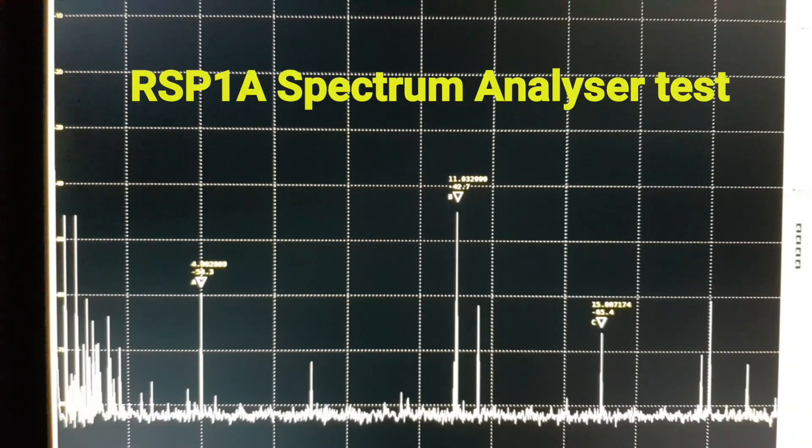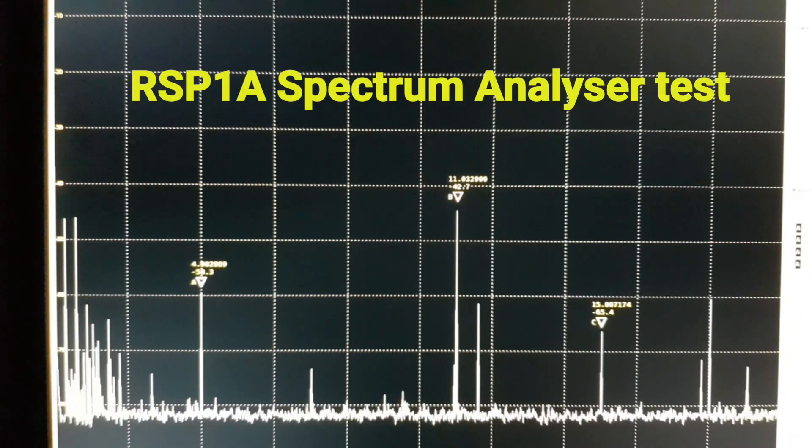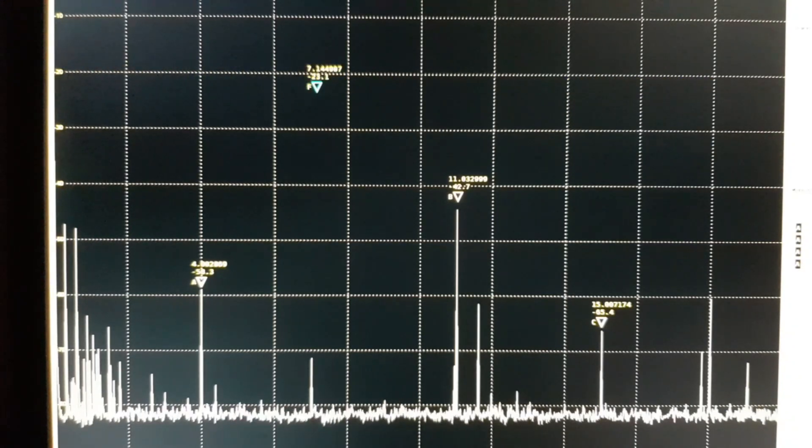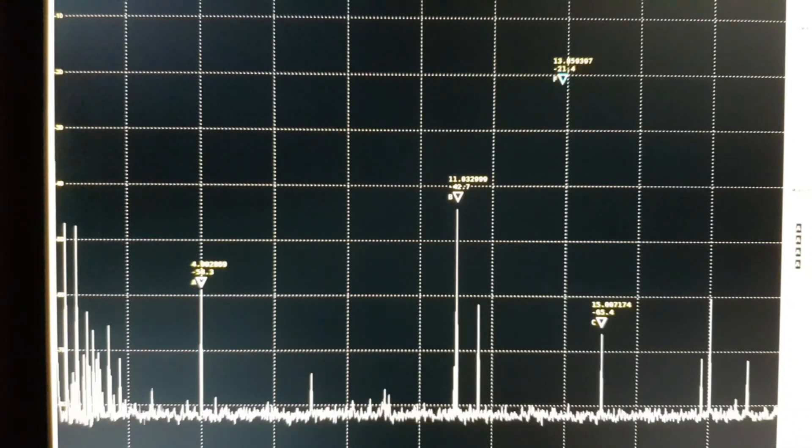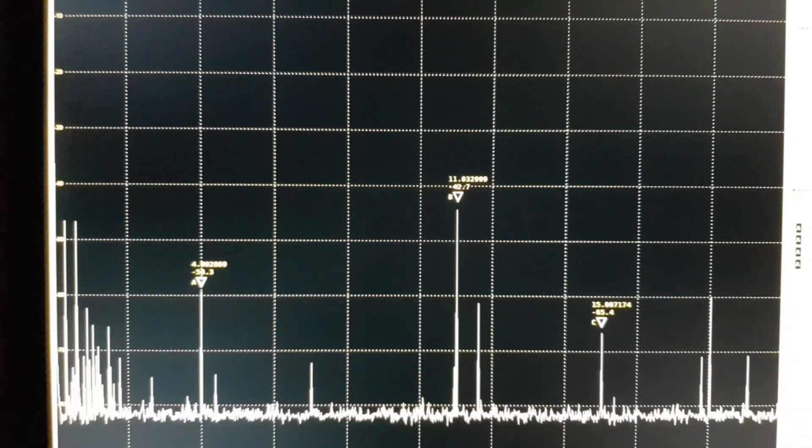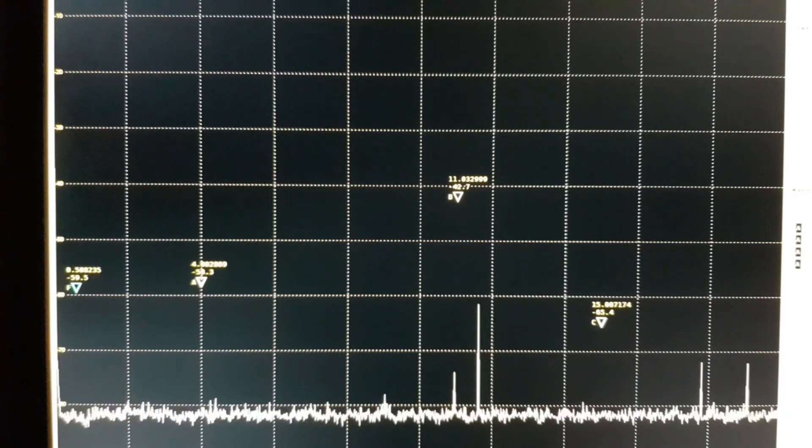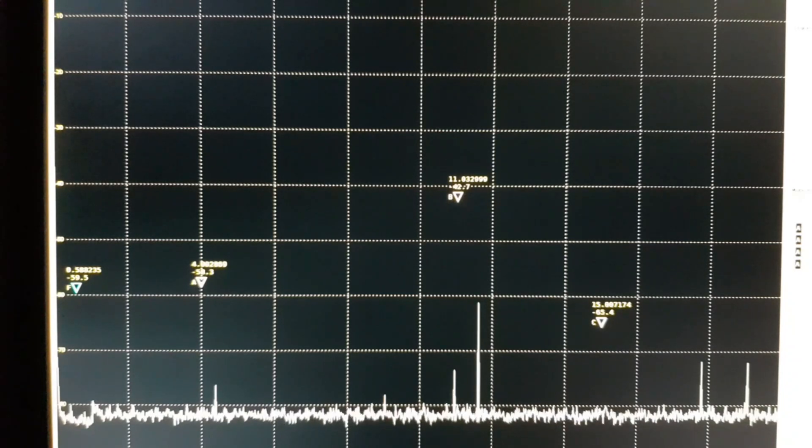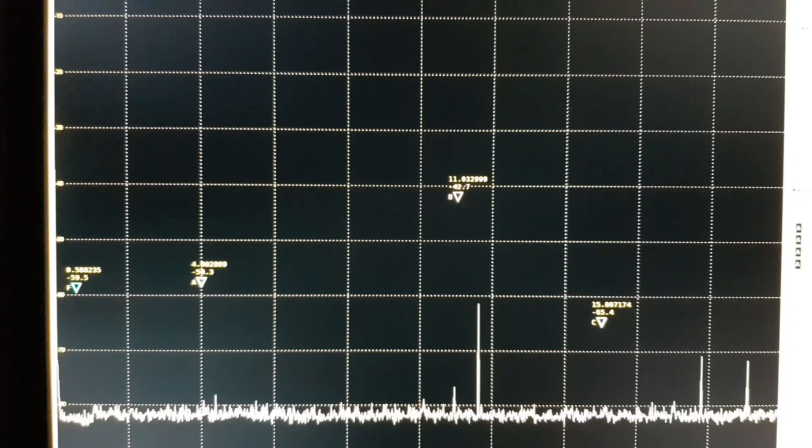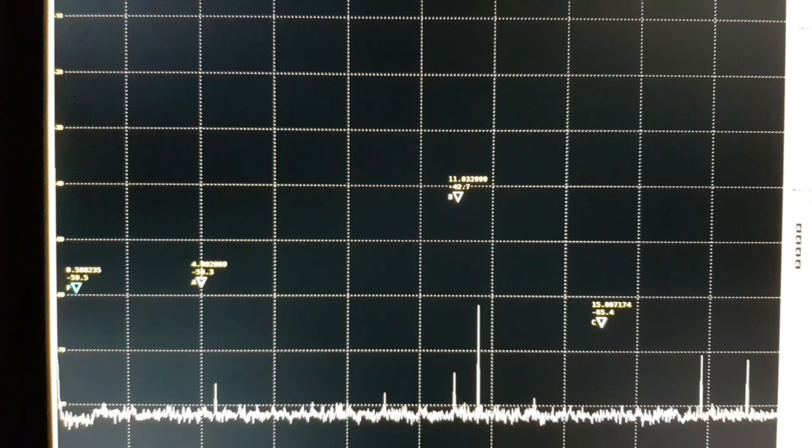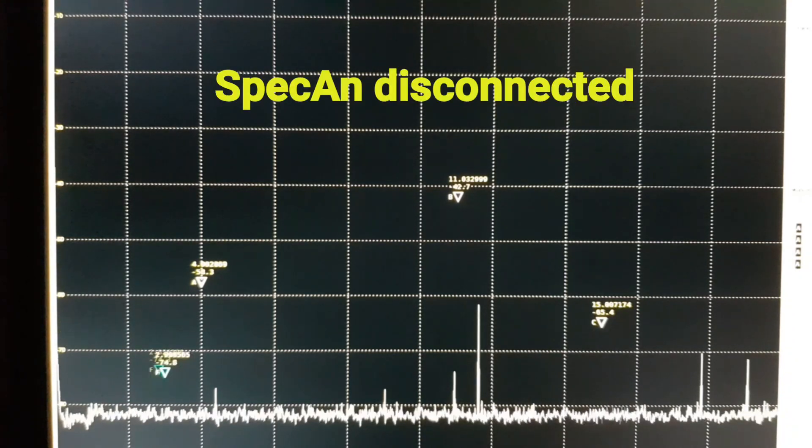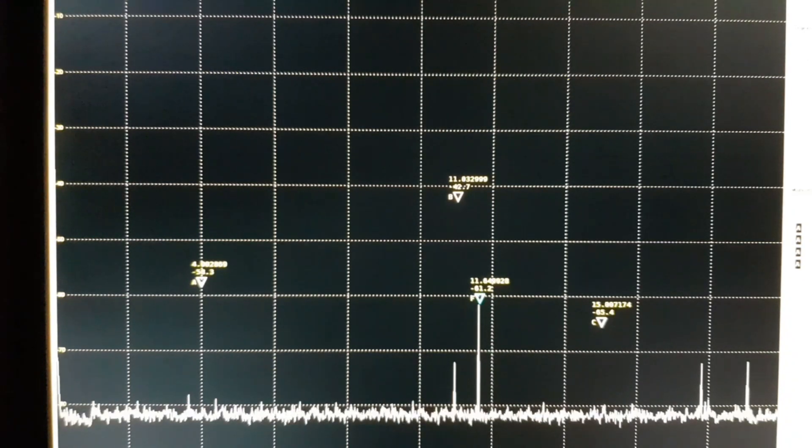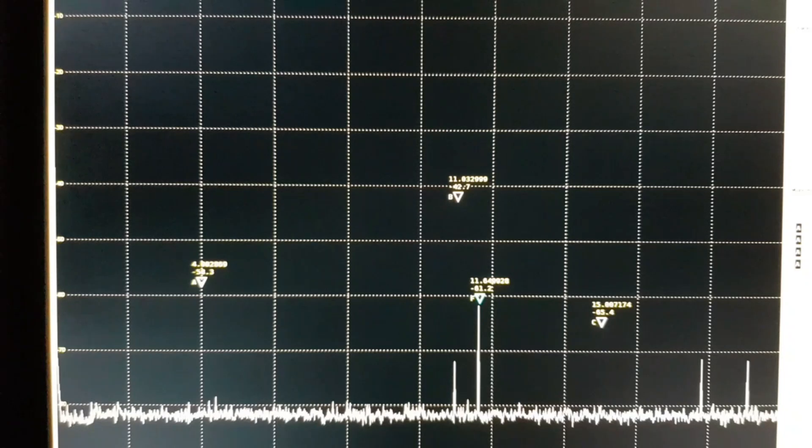So this is the RSP1A spectrum analyzer software, and we're 2 MHz per division, so DC down the bottom here, 20 MHz up on the right hand extreme. The first thing to do is to work out what spike is what. So I've disconnected the RSP1A entirely—it's just sitting on the bench, nothing connected. Little spike here, not sure what that is. There's always a spike here and I believe this may be related to an internal clock in the RSP1A.